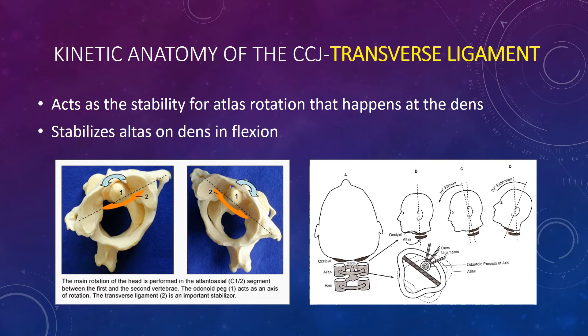The transverse ligament is kind of like a seat belt for the dens — it acts as a pivot point, securing that pivot point where 50% of all cervical rotation occurs, and that's at C1-C2.